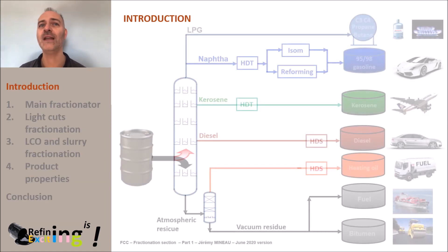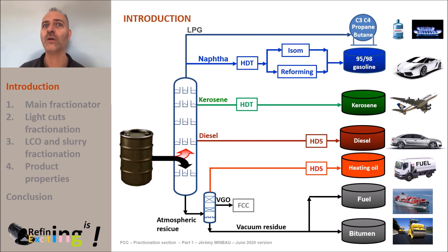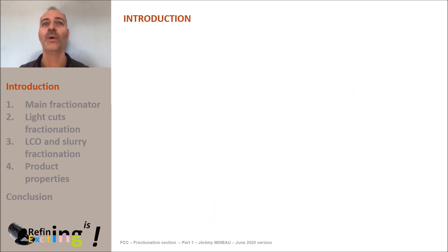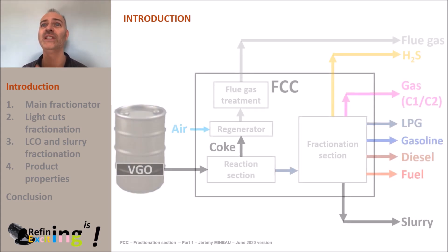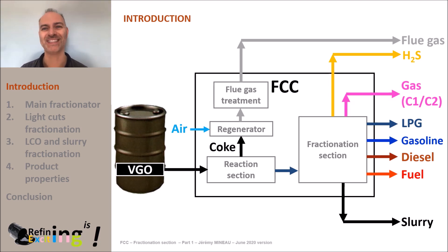In the first 10 videos dedicated to the FCC Reaction section, we recalled the role and the position of the FCC unit within a refinery. We recalled that the typical feed of a FCC unit is the VGO cut, with a typical distillation range from 375 to 550 degrees C. We also saw that the FCC was made up of four main sections, and we described in detail the operation of the Reaction section, the Regenerator and the Flue gas treatment section.